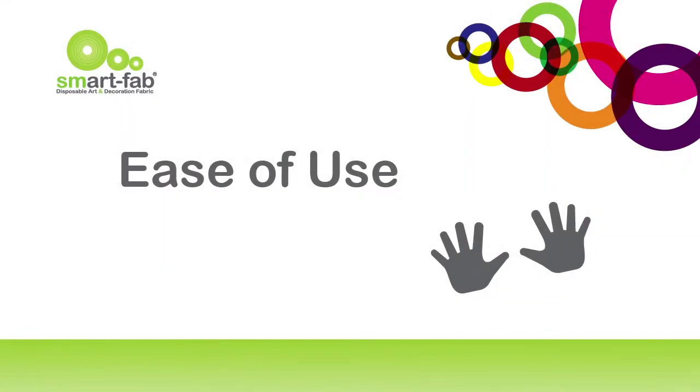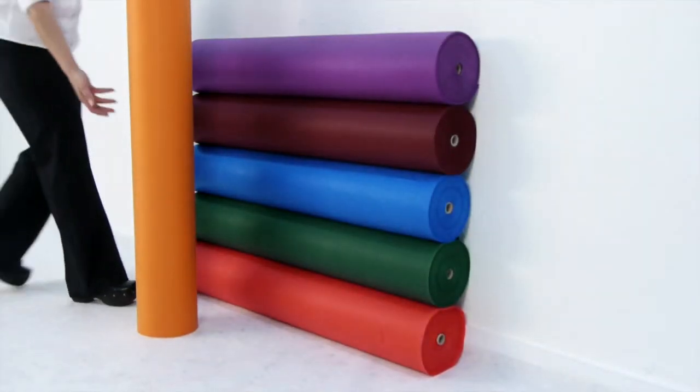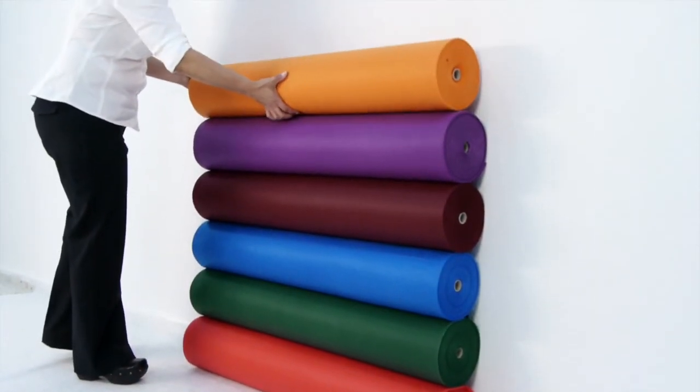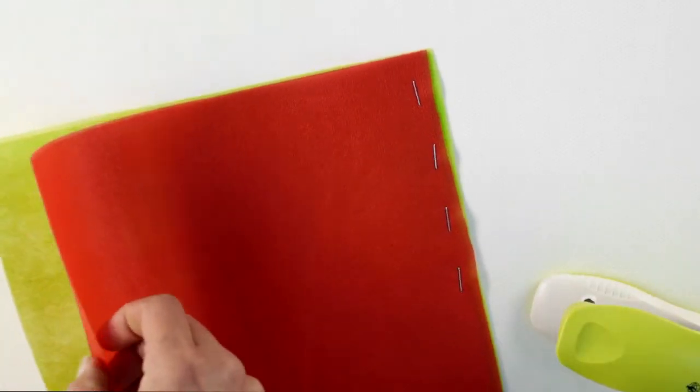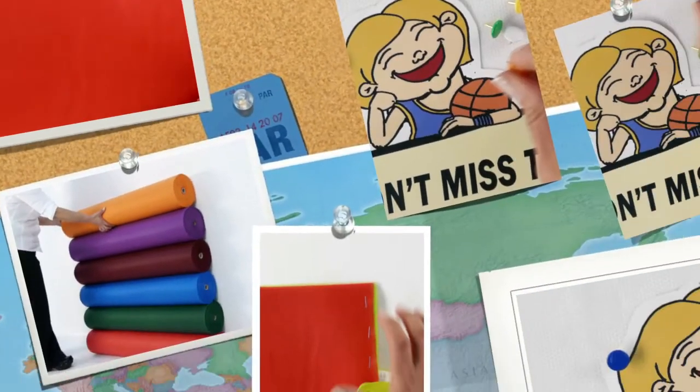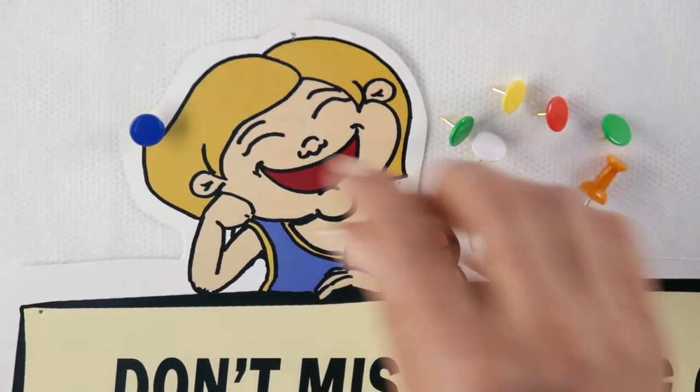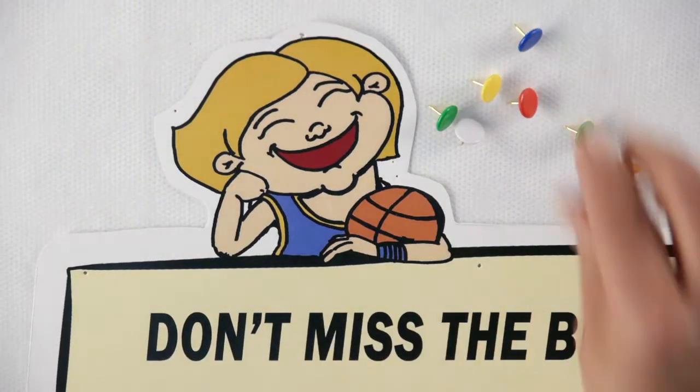Ease of use. SmartFab is a very lightweight fabric, so light that it's easy to lift an entire roll. You can attach pieces of SmartFab to one another with staples or thumbtacks. You can use pushpins to attach SmartFab to bulletin boards, and they won't leave holes when you remove them.